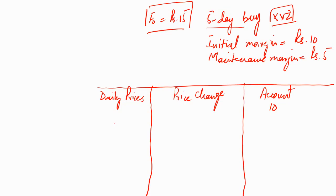On the very first day the price increases to 17 rupees — let's call this F1. Based on the mark-to-market principle, our buyer has gained a 2 rupee profit, because if he were to enter the contract today he would have purchased it at 17, which is 2 rupees higher than the previous day's price of 15. So we write plus 2 as the price change in the second column.